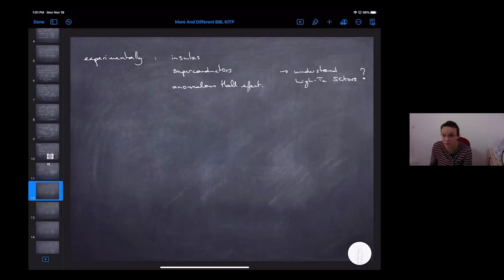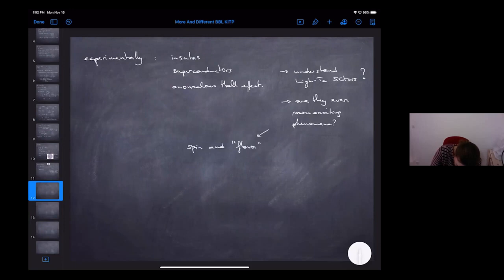Are the cuprate superconductors and these guys that are found experimentally in the same class? If they're not in the same class, it might be even more interesting. Are they even more exciting phenomena? Actually, I believe this is the case. There is, for example, many of these experiments find so-called spin and flavor spontaneous symmetry breaking.